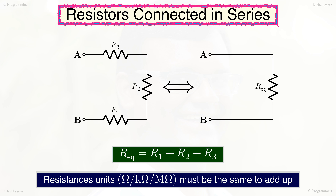Consider the electric circuit shown in the figure with three resistors connected in series. When an electric potential is applied between nodes A and B, an electric current will flow through all three resistors. The total resistance provided by these three resistors connected in series to the flow of electric current will be the added-up value of all three resistors. Quantities of the same units can be arithmetically added up to compute the correct value. Let us write a C program that can receive the values of three resistors of the same units through the keyboard, calculate the equivalent resistance by adding the three values, and display that value on the monitor.